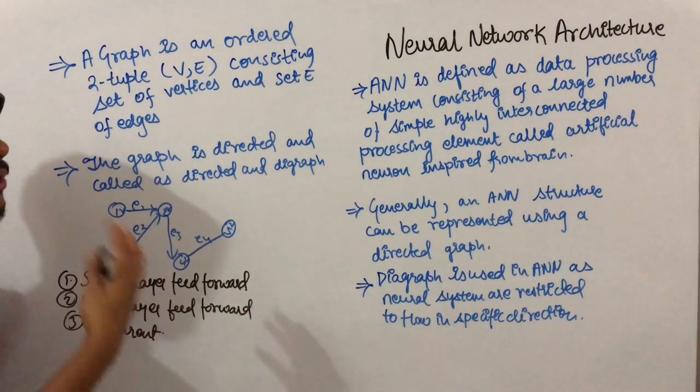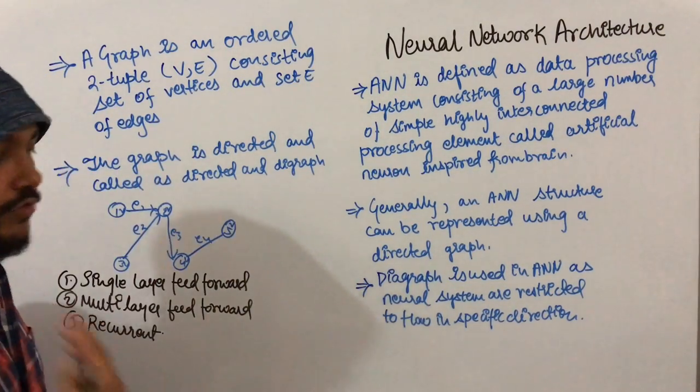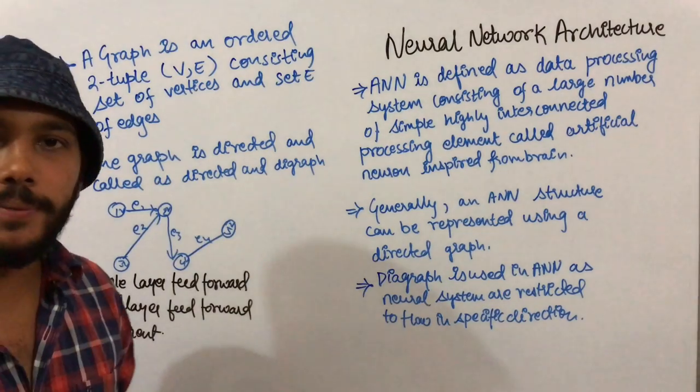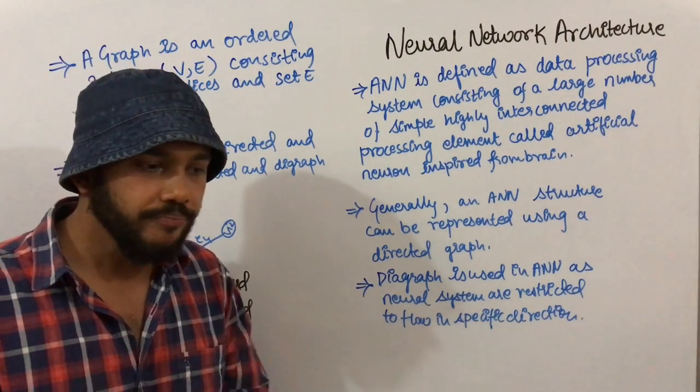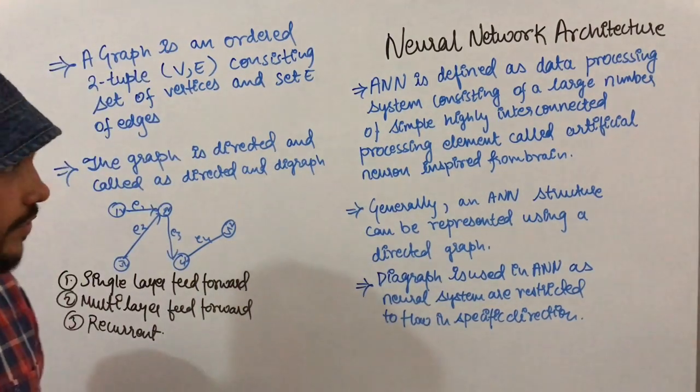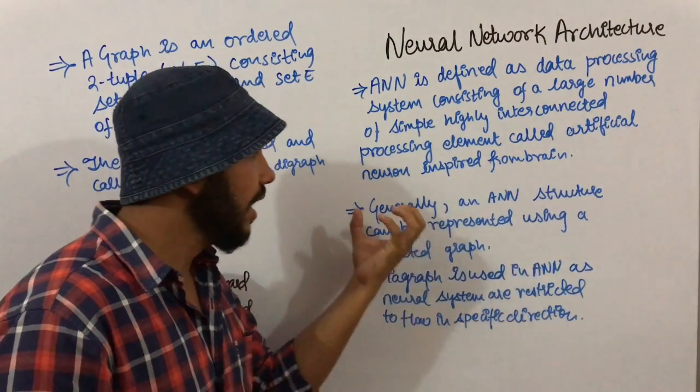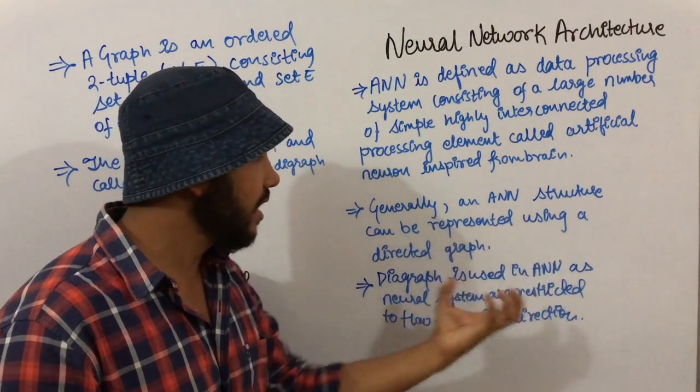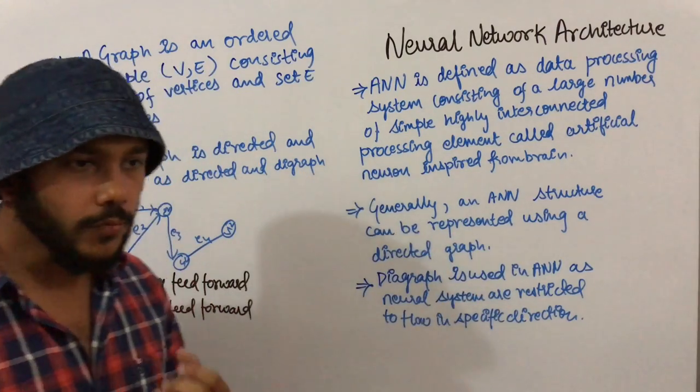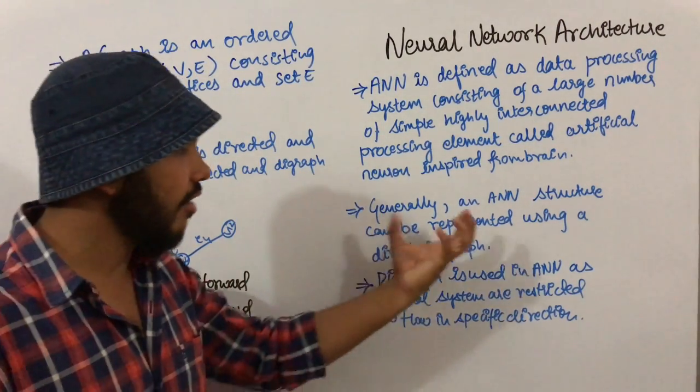When we talk about neural network architecture, we discuss how to represent the neural network in the form of graphs. Generally, artificial neural network structure can be represented using a directed graph, also called a digraph.